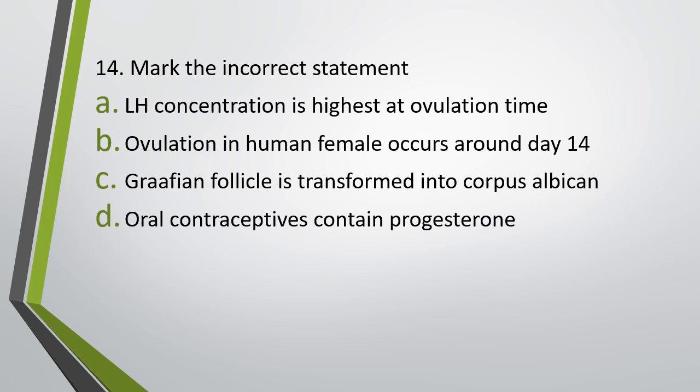Question number fourteen. Mark the incorrect statement. LH concentration is highest at ovulation time. Ovulation in human female occurs around day 14th. Graafian follicle is transformed into corpus luteum and not corpus albicans.